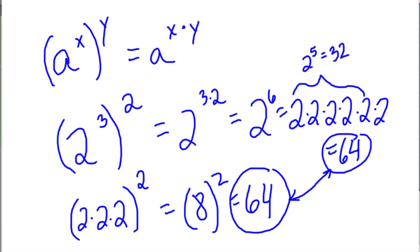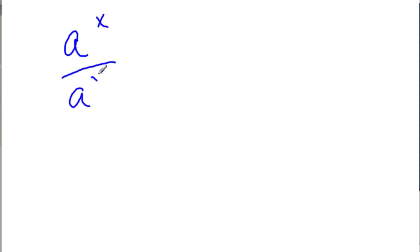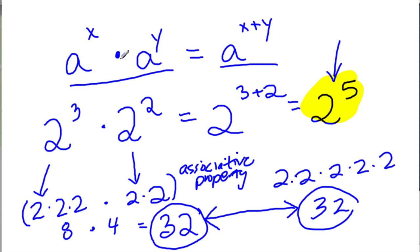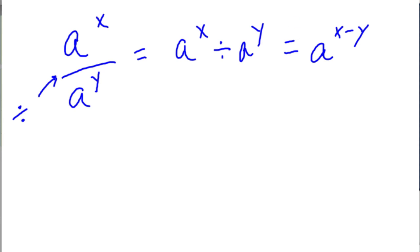The last law we'll talk about today involves division. We have a to the x over a to the y. The vinculum — that fraction bar — means divide, so this is really a to the x divided by a to the y. A shortcut here is to keep the base the same but subtract the exponents. That makes sense: when multiplying same bases we added exponents; since division and multiplication are inverse operations, now we subtract. Let's try 2 to the third power divided by 2 to the second.